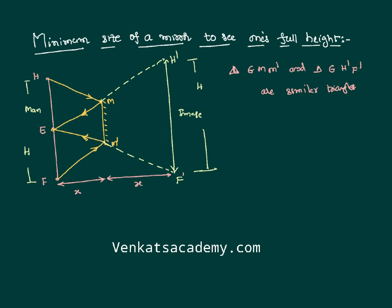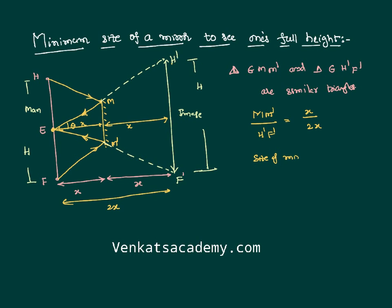We can use the similar triangles to say the ratios of the sides are equal. Say this is angle theta — the opposite side in the smaller triangle is MM-dash, and in the bigger triangle it is H-dash F-dash, which is the size of the man. The distance for the smaller triangle is x, and for the bigger triangle the total distance is x plus x, which is 2x. So x and x cancel, leaving MM-dash over H-dash F-dash equals 1 over 2.